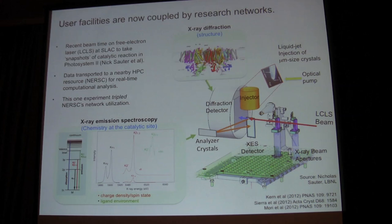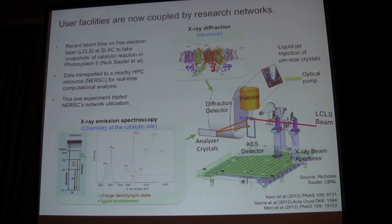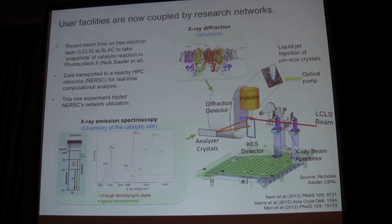More and more facilities funded by DOE are being coupled together in discovery workflows that wouldn't have been possible without very high-performance networks. Recently, a set of scientists including Nick Sauter at the Advanced Light Source had beam time at LCLS — a free electron laser at SLAC — to explore and take snapshots of the catalytic reactions of Photosystem II, taking advantage of very short pulse times. The data collected during that roughly two-week beam time was too big for the local computational facilities at SLAC to process in real time, and the workflow required real-time processing to give feedback to scientists to adjust experiment parameters.